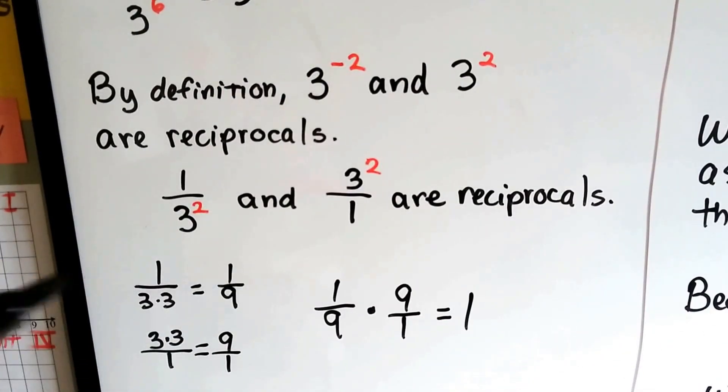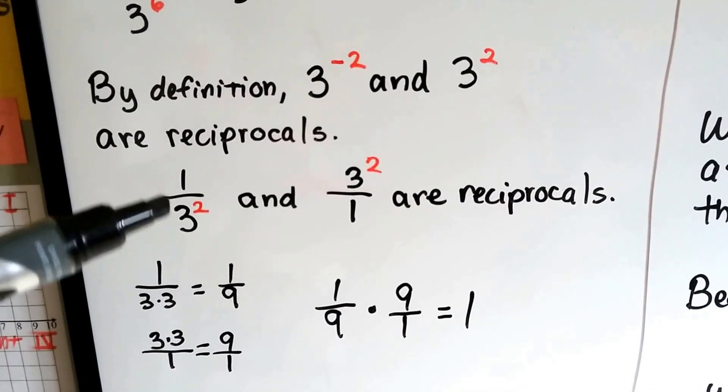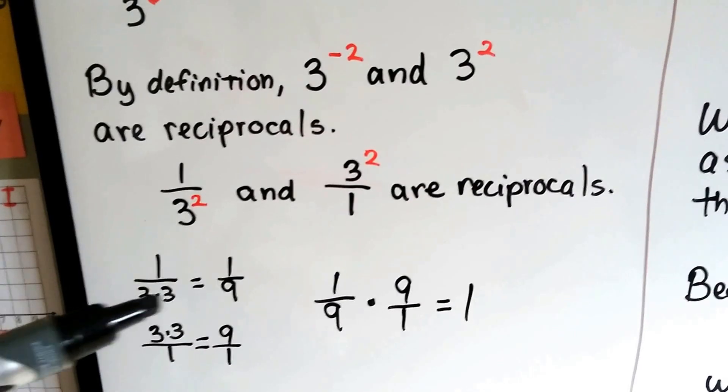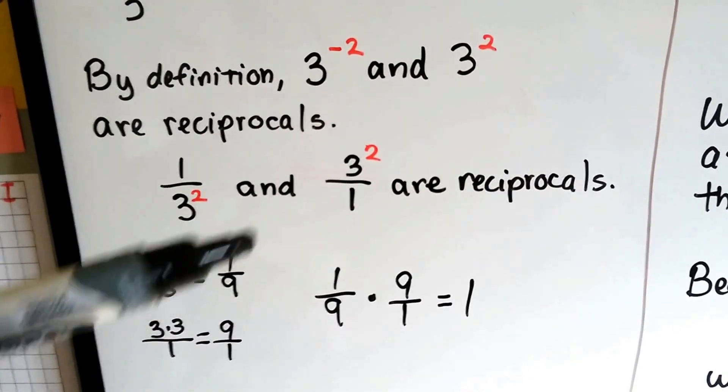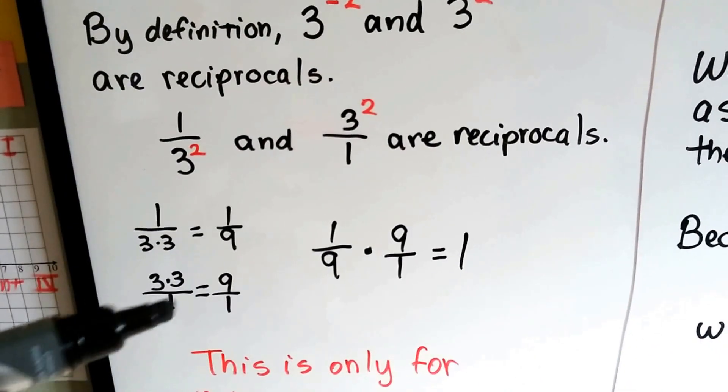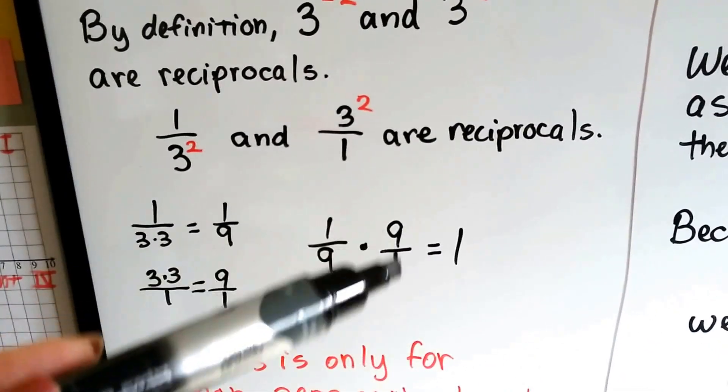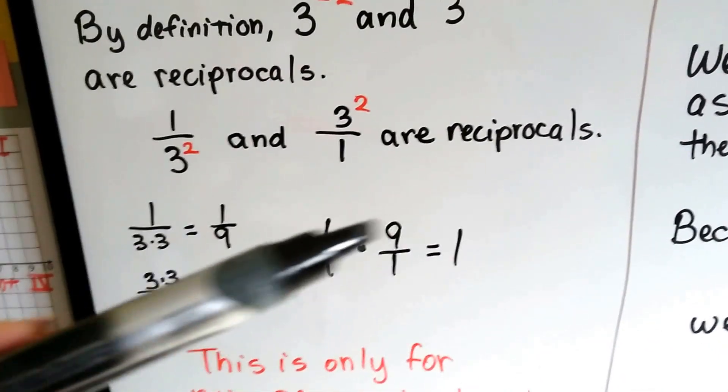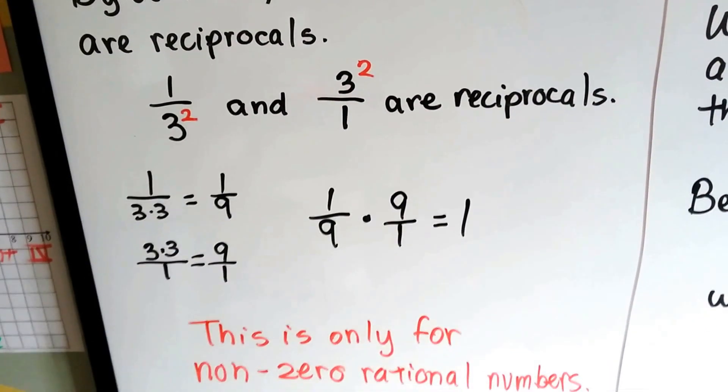this and this are reciprocals, because 1 over 3 to the second power means 1 over 3 times 3. That's a 1 ninth. And 3 to the second power over 1 is 3 times 3 over 1, or 9 over 1. And these are reciprocals of each other, aren't they? When we multiply them straight across, we get a 9 over a 9, which is a 1.